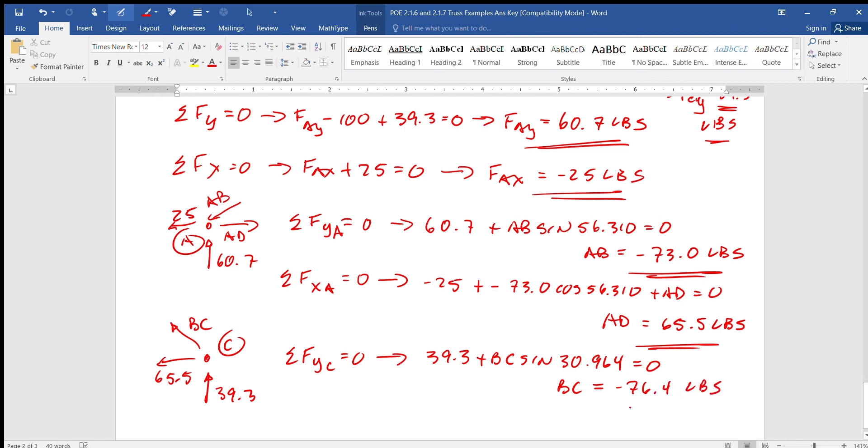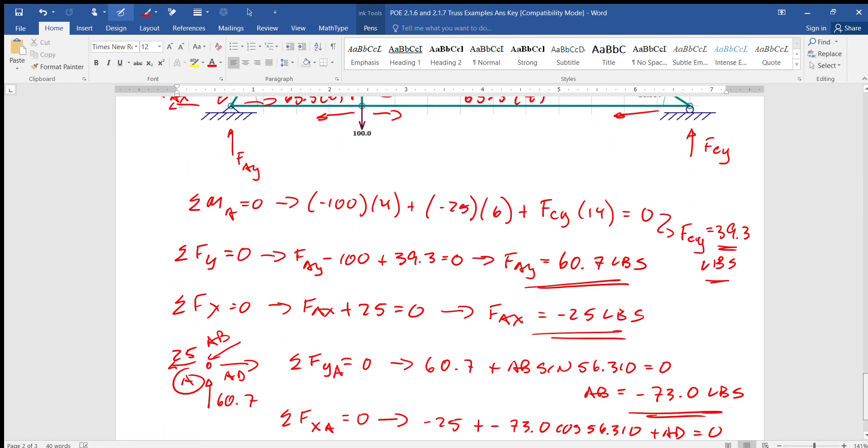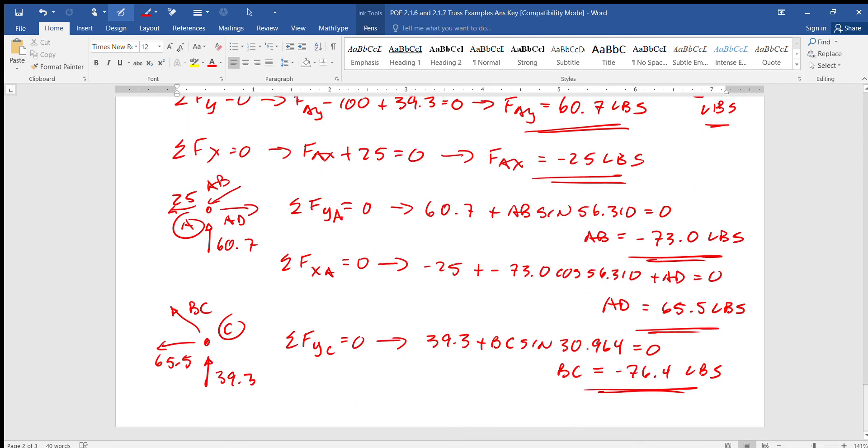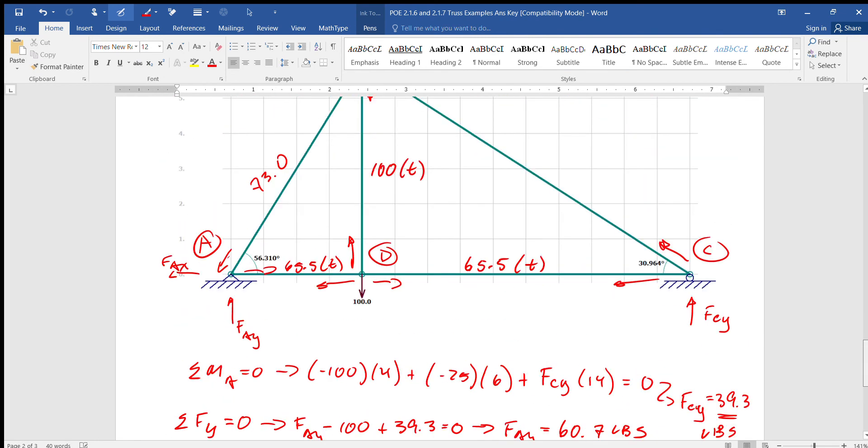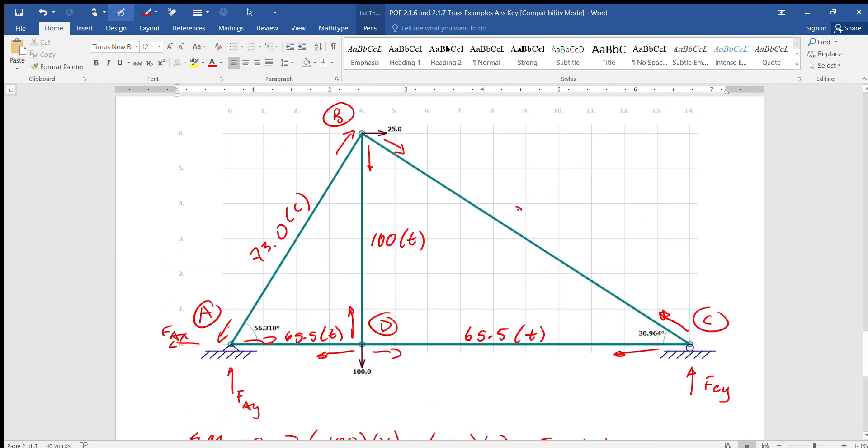BC equals negative 76.4 pounds. And we're done. I'm not going to do the X thing, you can check it if you want. And we're going to fix the arrow down here, so this arrow becomes the other way because it is in compression.